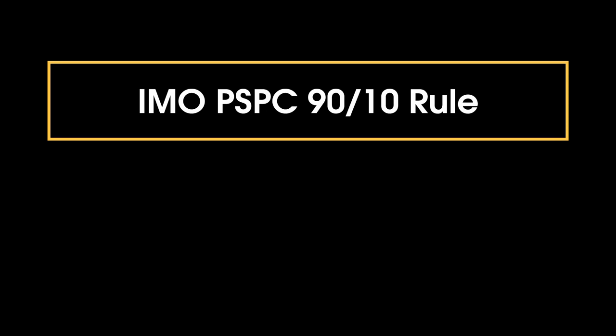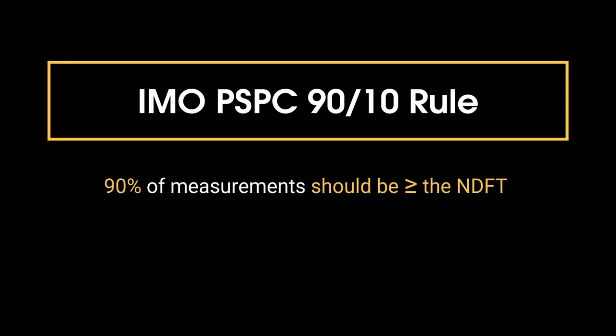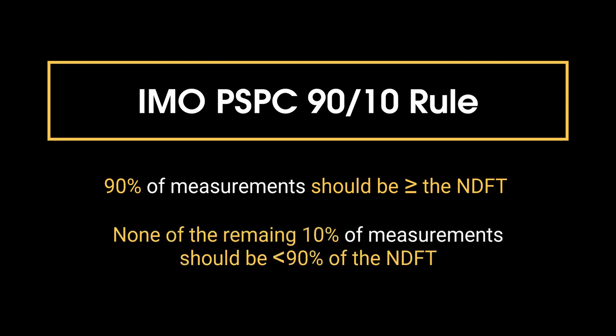The 9010 rule requires that 90% of all thickness measurements should be greater than or equal to the NDFT, or Nominal Dry Film Thickness, and none of the remaining 10% measurements should be below 90% NDFT.